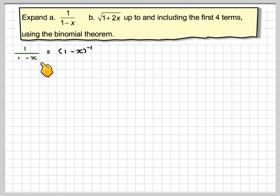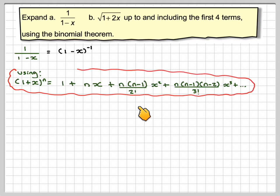So we've got 1 over 1 minus x equals 1 minus x to the minus 1, that's the first thing we need to do. And then we can use this idea that (1 + x)^n equals 1 + nx + n(n-1)/2! x² + n(n-1)(n-2)/3! x³, and this carries on forevermore because it's infinite.